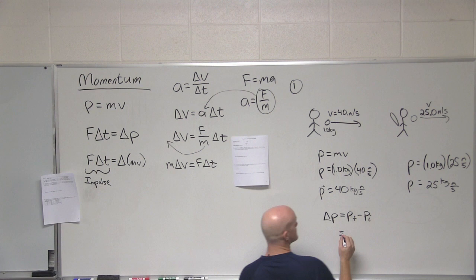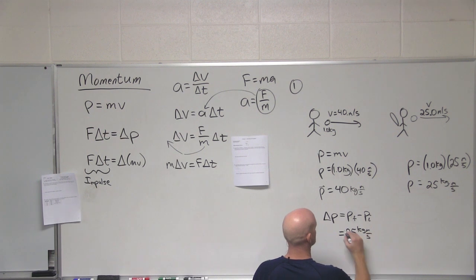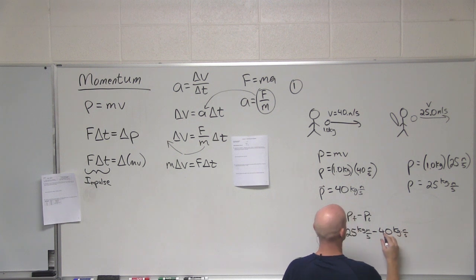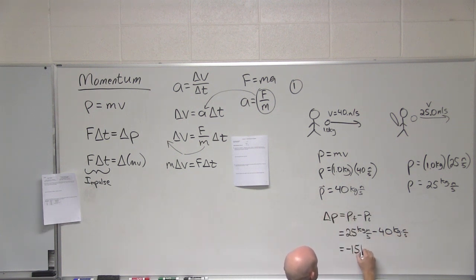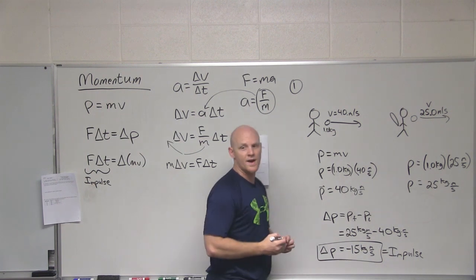Which in this case is 25 kilogram meters per second minus 40 kilogram meters per second, which is... Why is it negative? Yeah, in this case, it slowed down. The impulse was in the opposite direction of where the original momentum is going. Great.